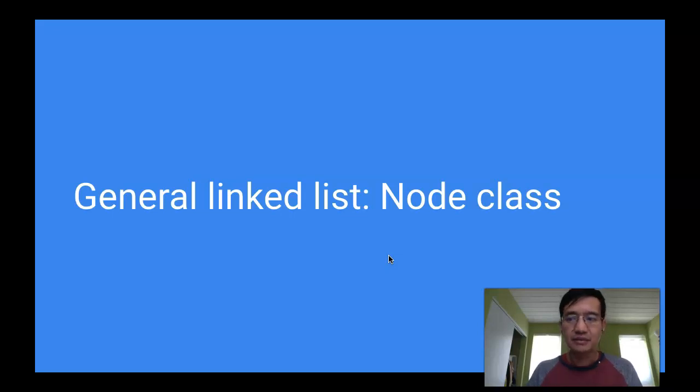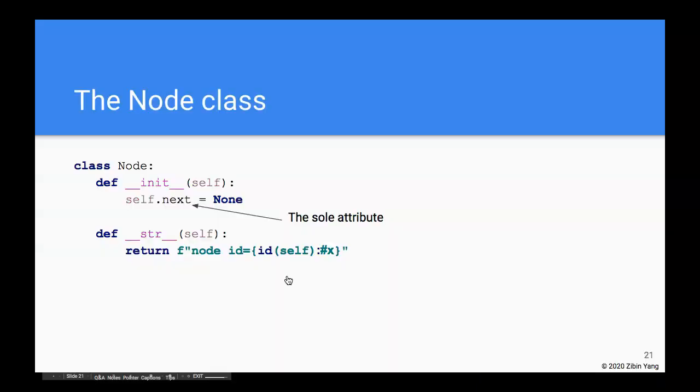Hi, in this video we're going to talk about the Node class in the general linked list implementation. So the Node class is very simple as far as the number of attributes is concerned—it has one attribute, the next pointer that points to the next node in the linked list. Now when we instantiate a new node, we don't know what the next pointer is or the next node is, and therefore we initialize it to None.